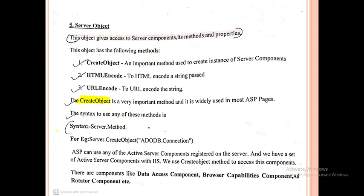The syntax is Server.CreateObject followed by the method name. For example, Server.CreateObject("ADODB.Connection"). The ADODB.Connection string is used when performing database connectivity. Server-side connectivity with a database uses this connection string.